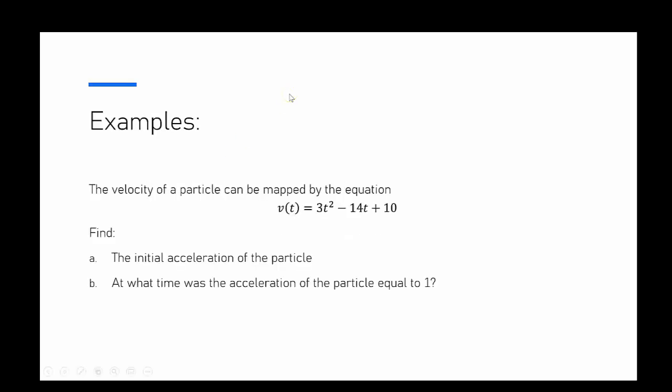The example we're going to focus on is we've got a velocity equation of a particle mapped by the equation 3t squared minus 14t plus 10, and we're going to find the initial acceleration of the particle and at what time the acceleration of that particle was equal to 1.